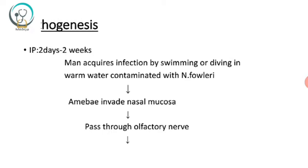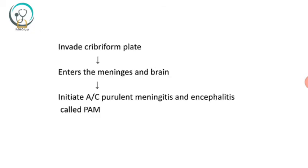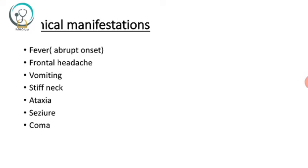Regarding pathogenesis, the incubation period is about two days to two weeks. Humans acquire infection by swimming or diving in warm water contaminated with Naegleria fowleri. The amoeba invades the nasal mucosa, passes through the olfactory nerve, invades the cribriform plate, enters the meninges and brain, and initiates acute purulent meningitis and encephalitis — called PAM.